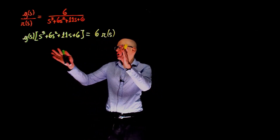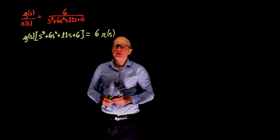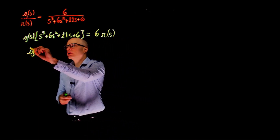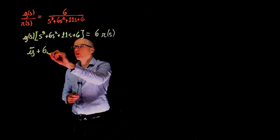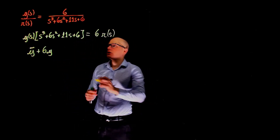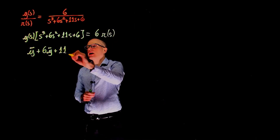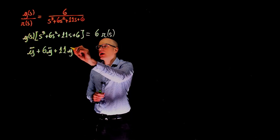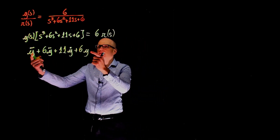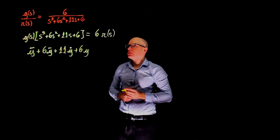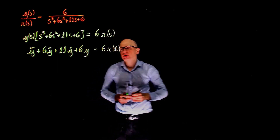Now that we are in the Laplace domain, we can go back to the temporal domain. So y(s) times s³ corresponds to y triple-dot, plus 6 times y(s)·s² gives y double-dot, plus 11 times y·s gives y-dot, plus 6 times y. Taking the Laplace of this expression brings us back. This equals 6r(t), or simply 6 times r.